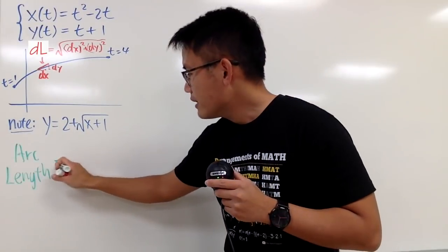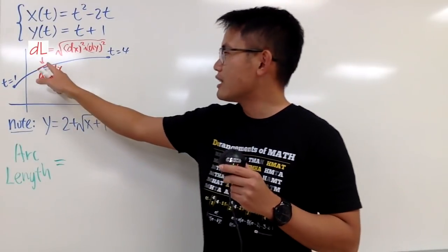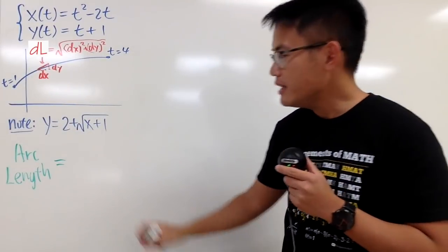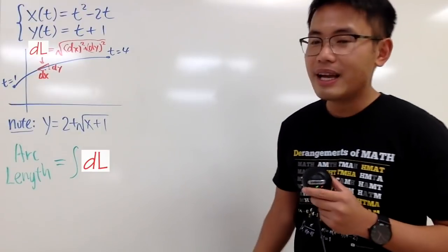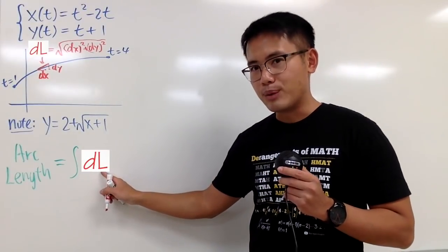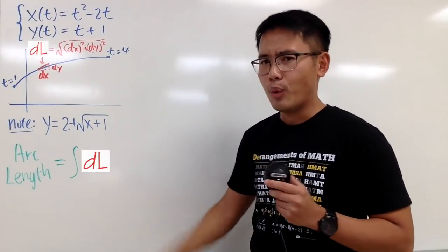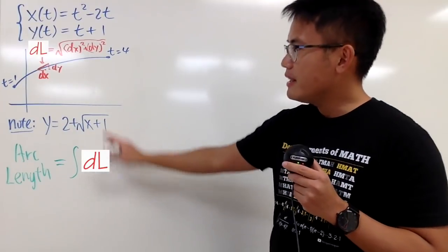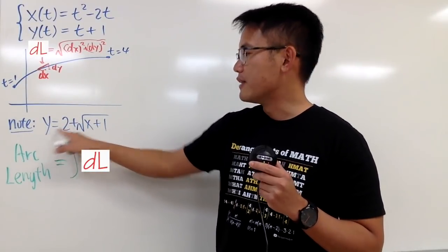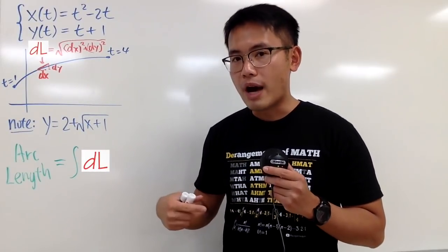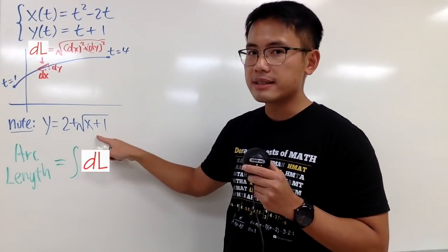And the arc length is pretty much that we just add all the dL's from here to here. Of course, we have to use integral. So we have the integral of all the dL's. The problem is that we don't know too much about dL. I don't know the L world, but it's okay. Depending on the situation, depending on if you have y as a function of x, or x as a function of y, in our case, we have y as a function of x.